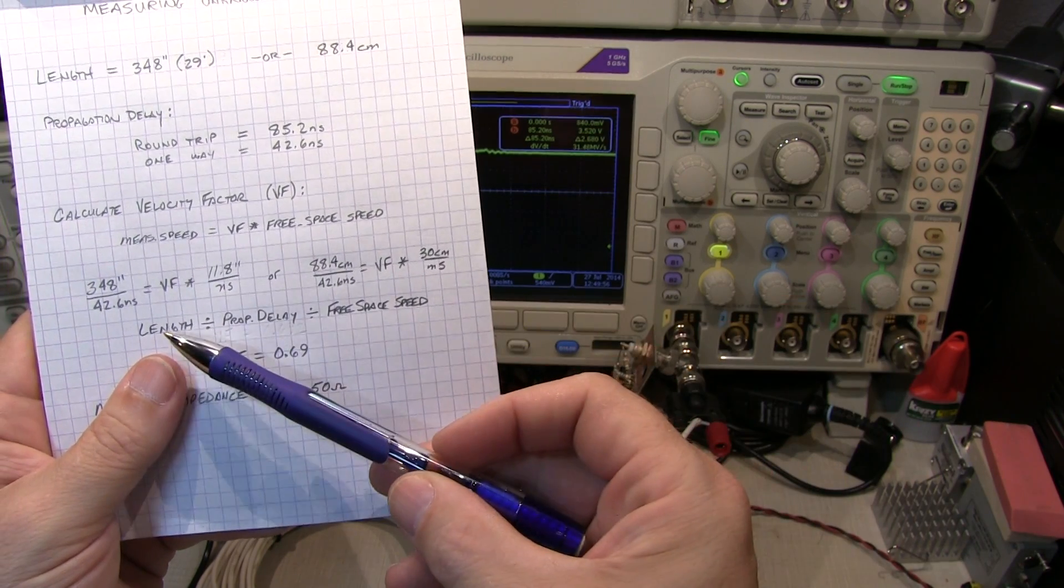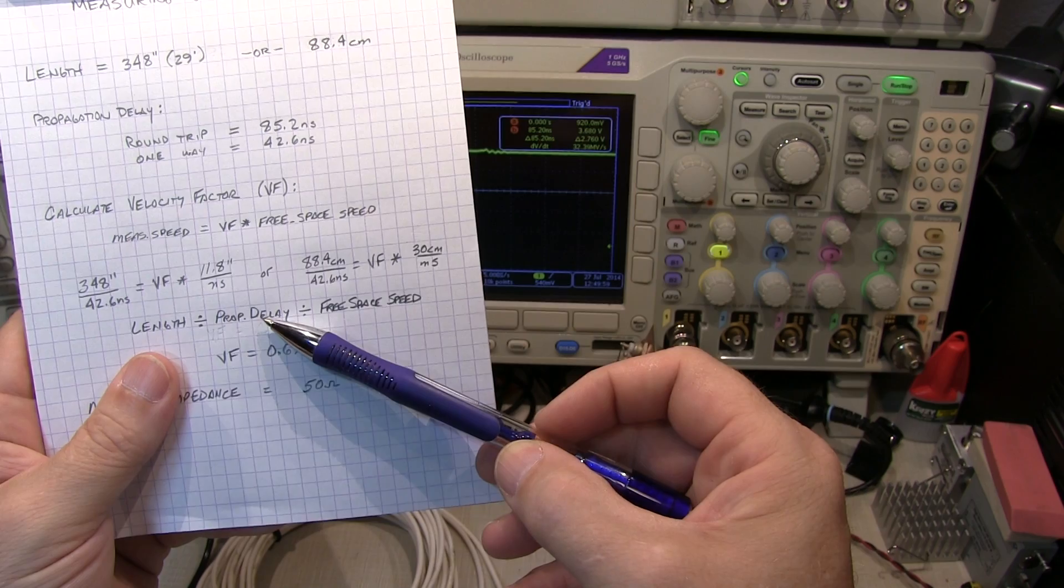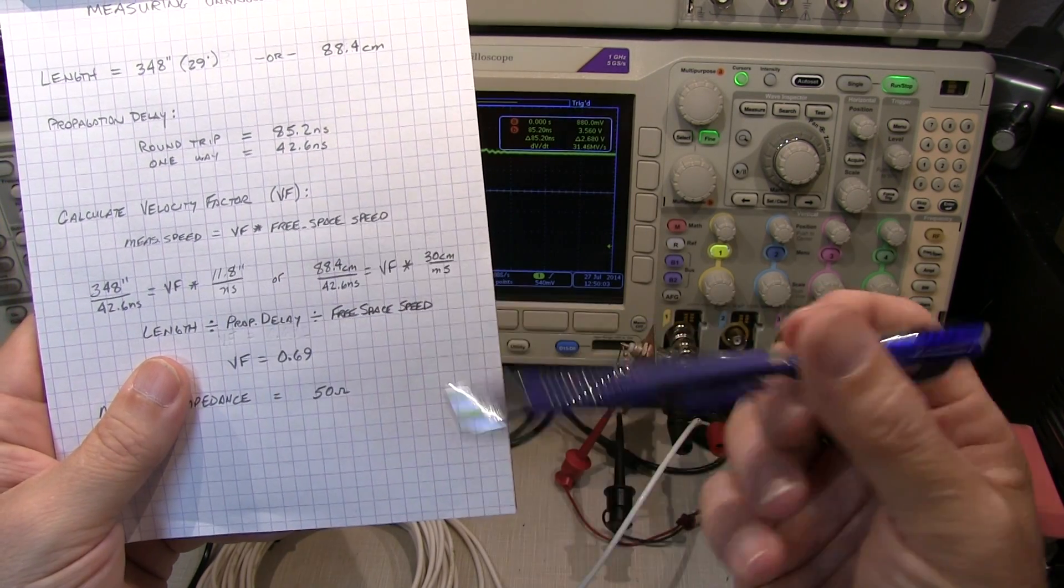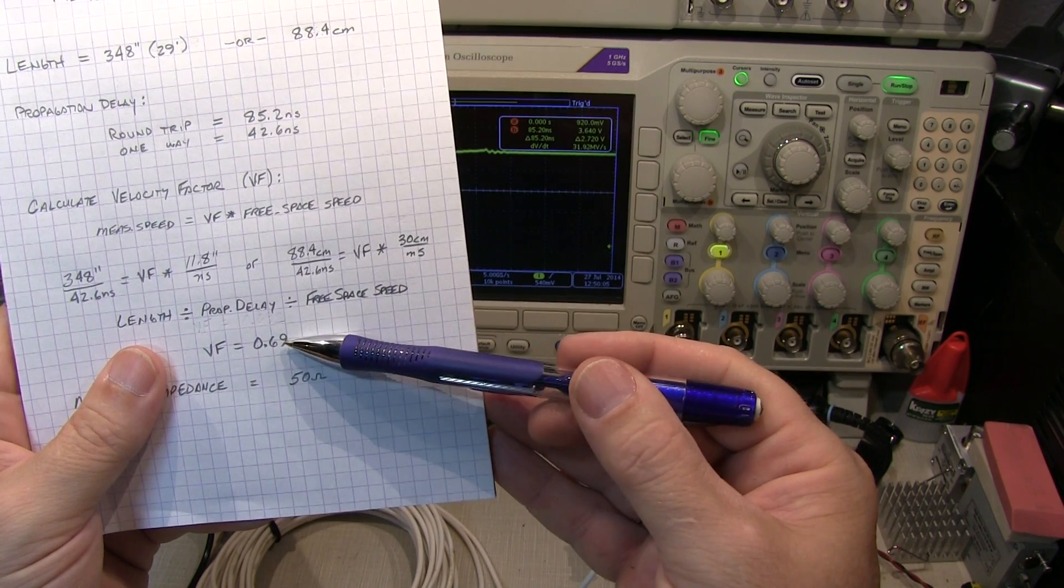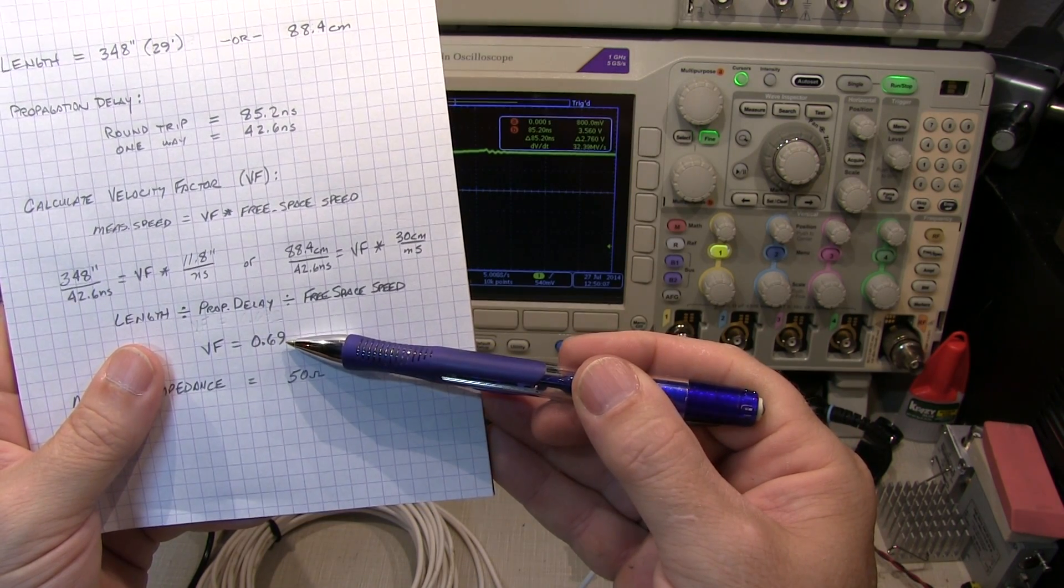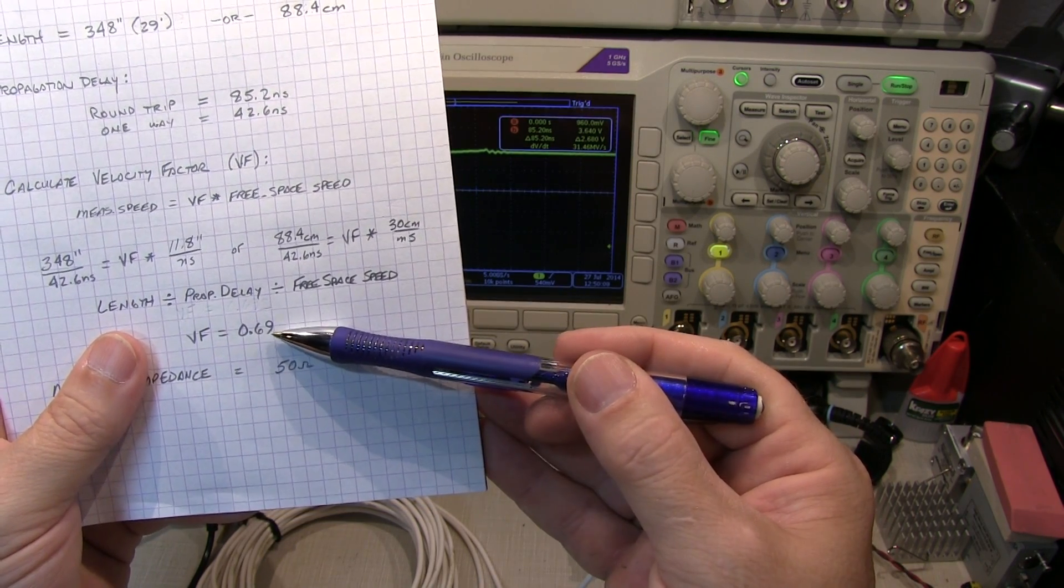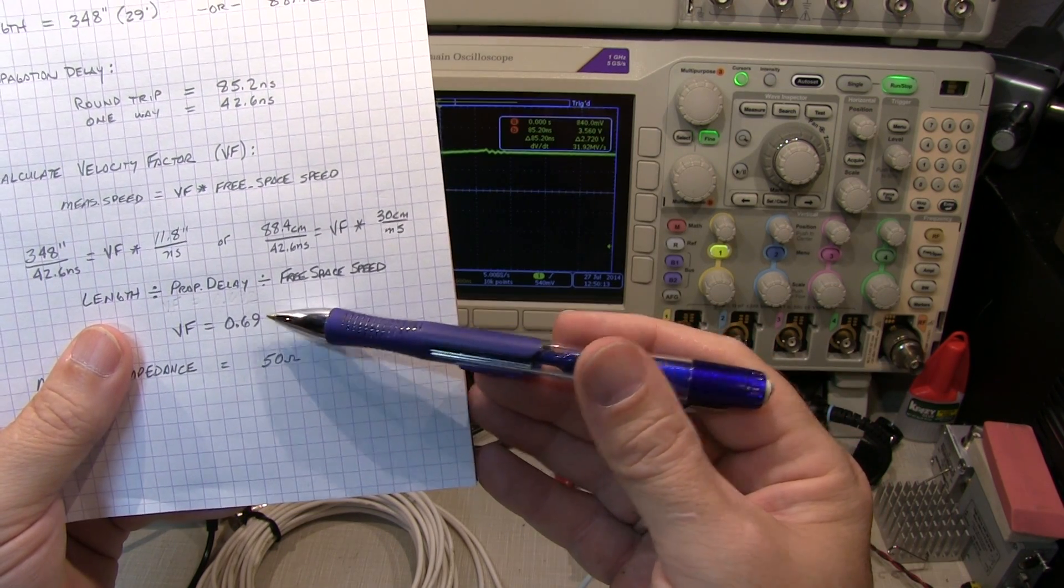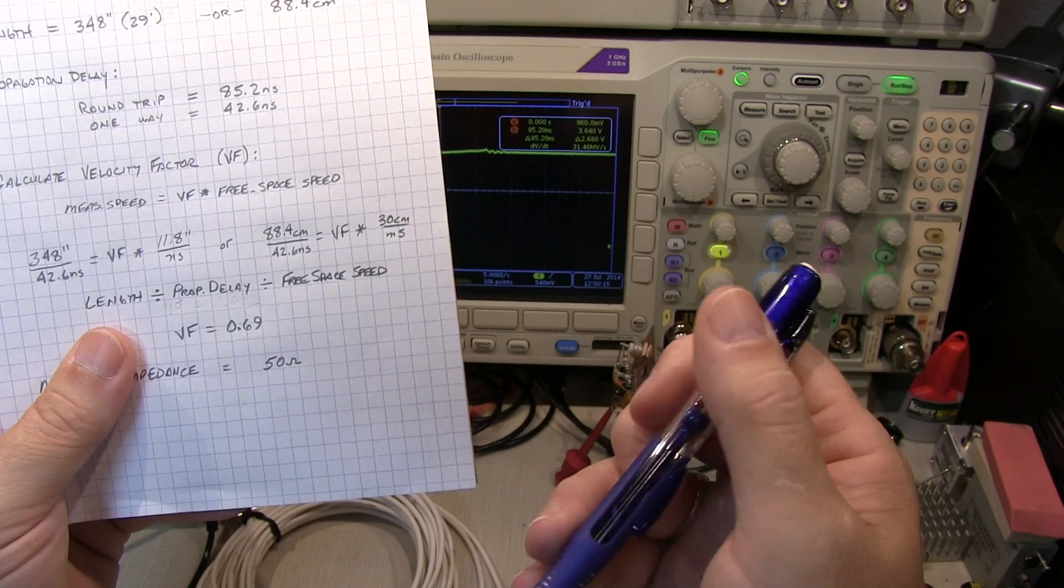In other words, we basically take the measured length divided by the propagation delay divided by the free space speed, making sure you keep the units all the same. And if we do that, we come up with a velocity factor of 0.69. And that's quite reasonable and definitely in the ballpark of typical coax used for RF applications.